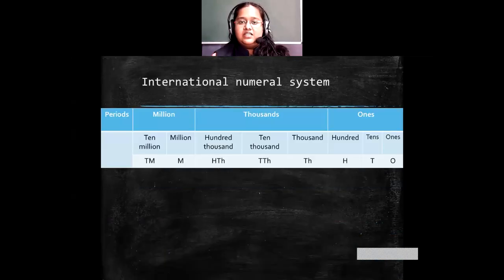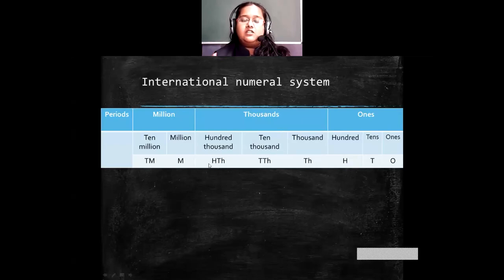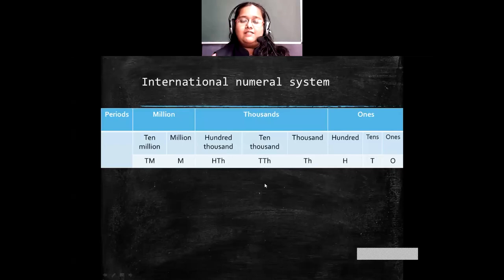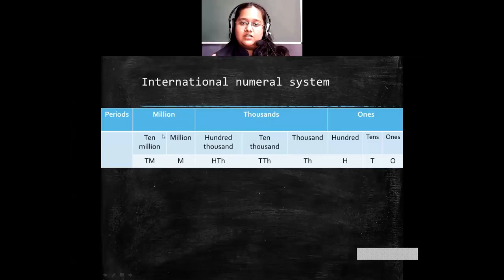Then we have the international numeral system — the numeric system used worldwide. In the ones period we have ones, tens, and hundreds. Then thousands and ten-thousands. But instead of lakhs as in the Indian system, in the international system we have 100,000 — that is one hundred thousand. So 100,000 is equivalent to 1 lakh. After 100,000 we have 1 million. So 10 lakhs equals 1 million.